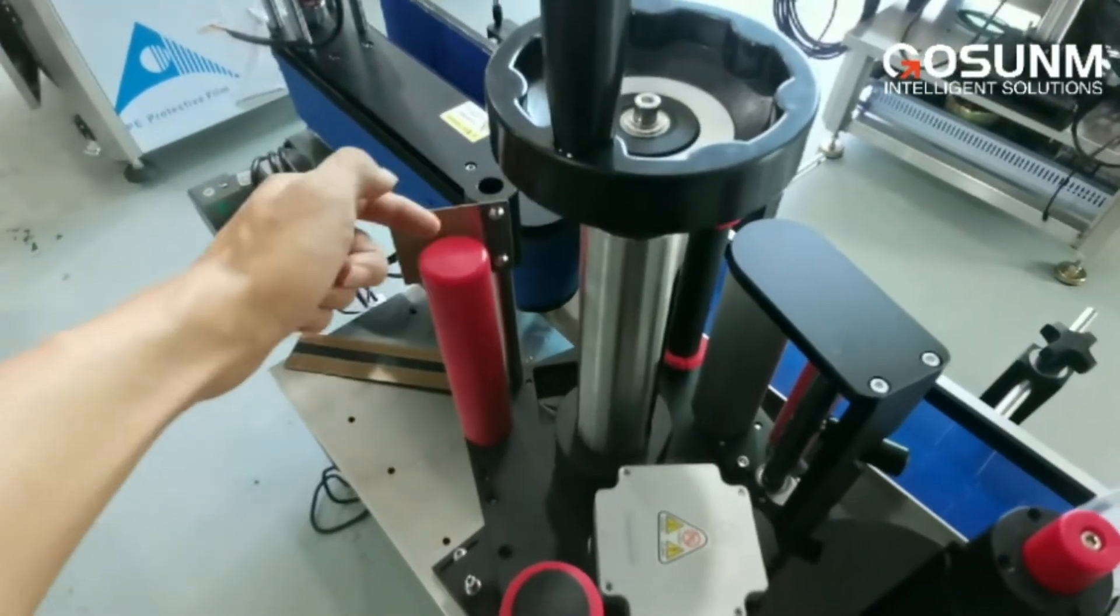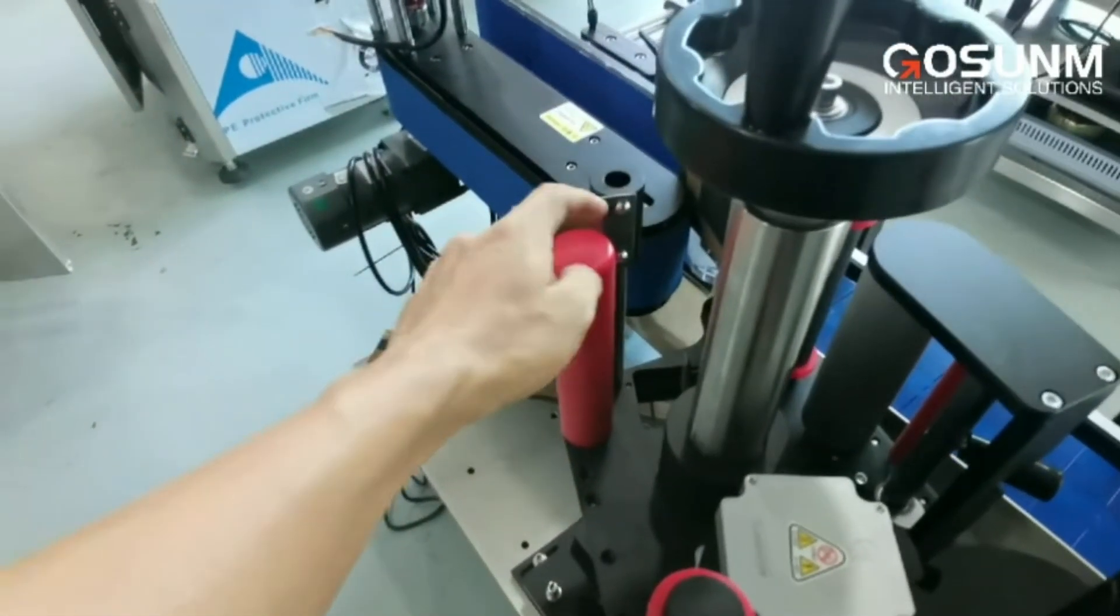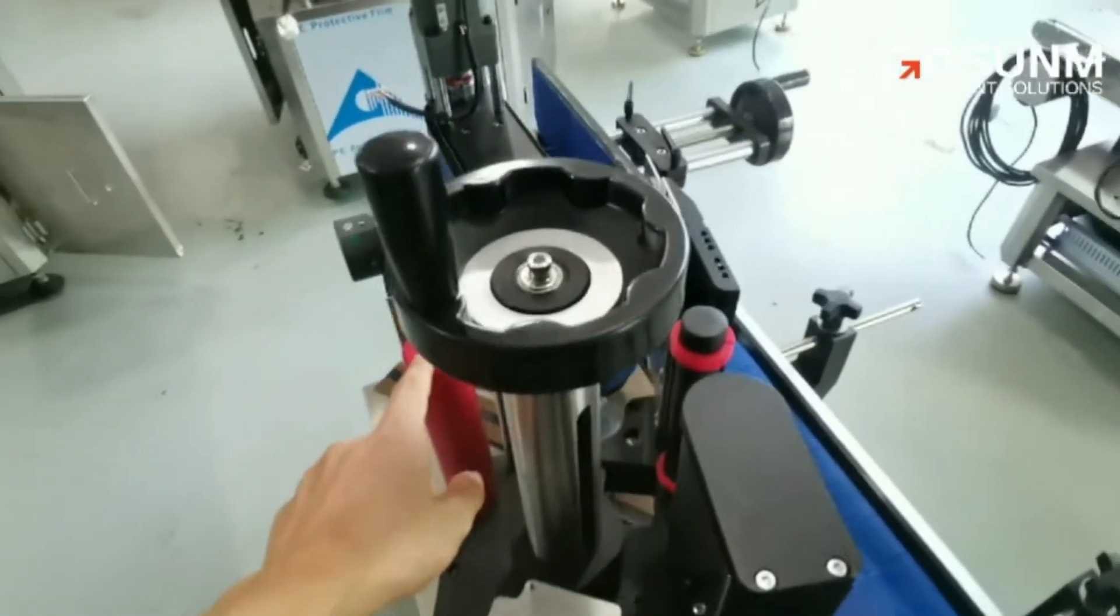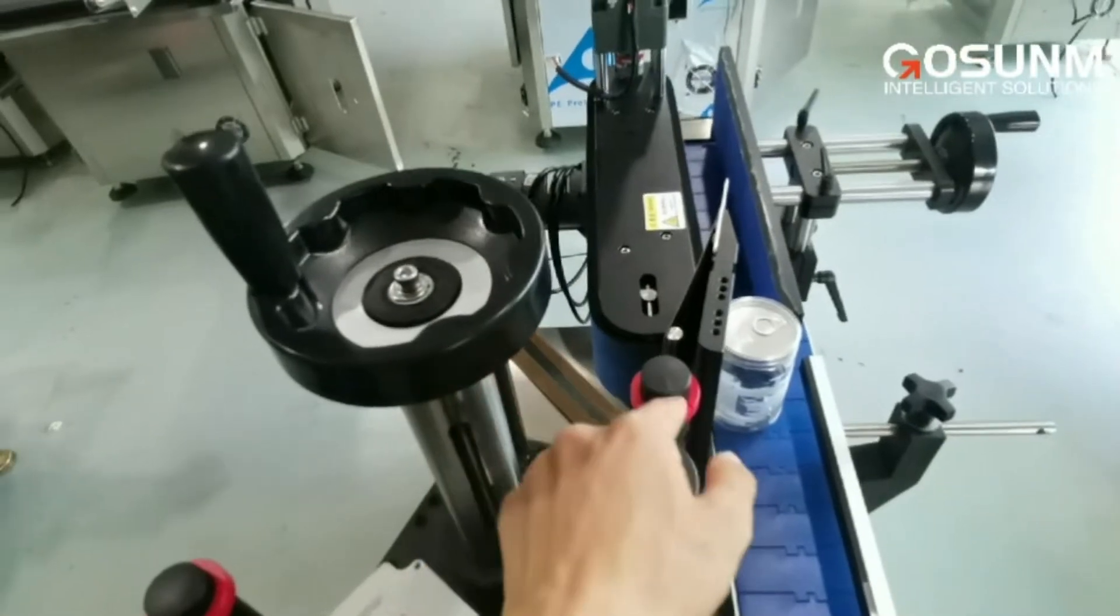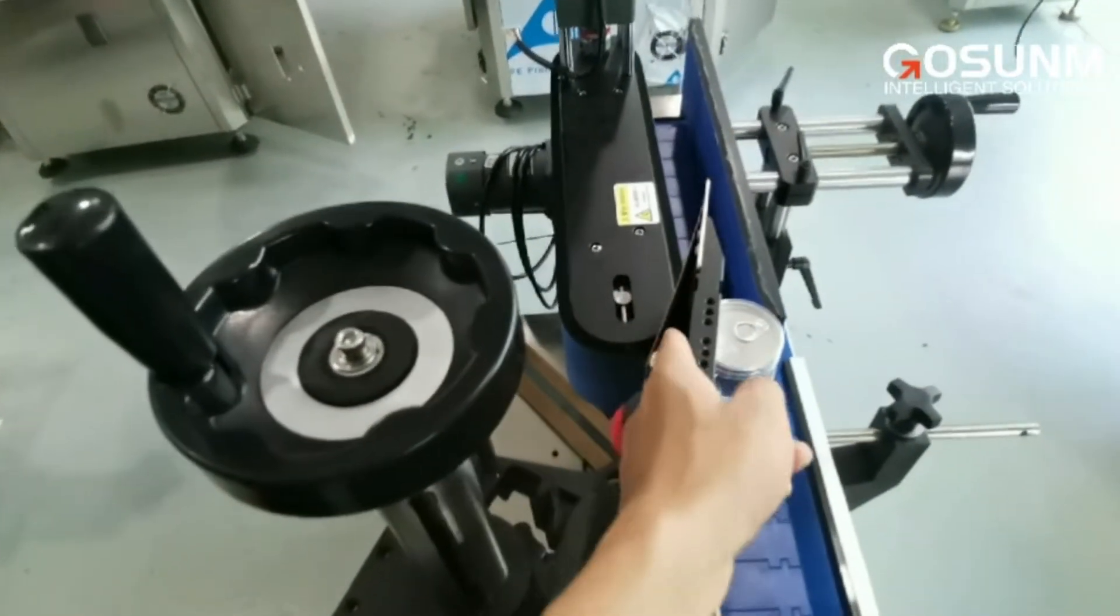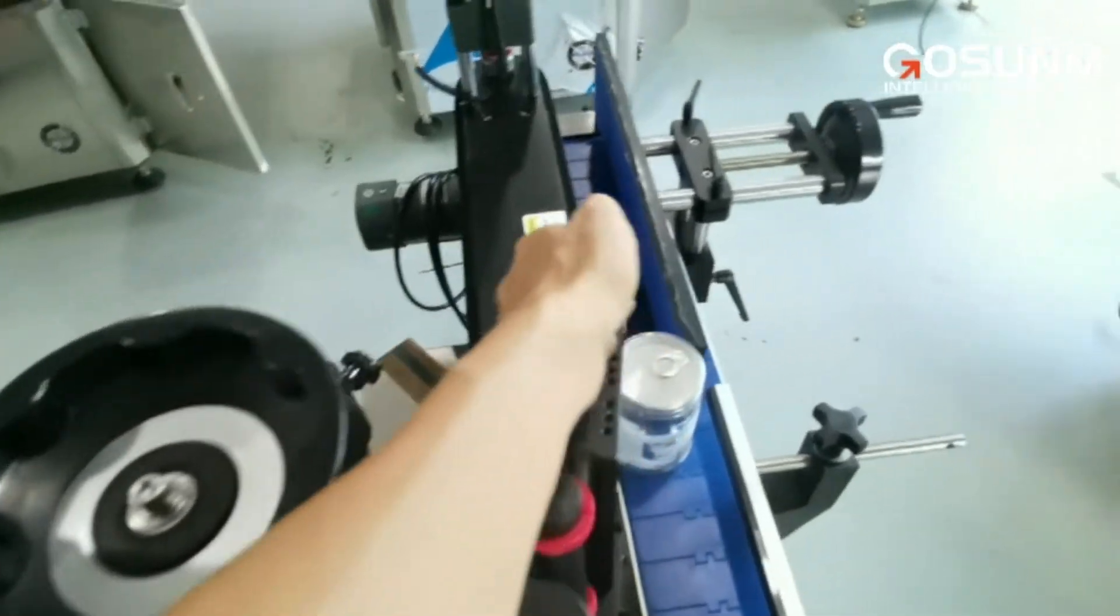And actually, there will be a label sensor here to detect the label. And then the label will go between this runner and this peeler plate.